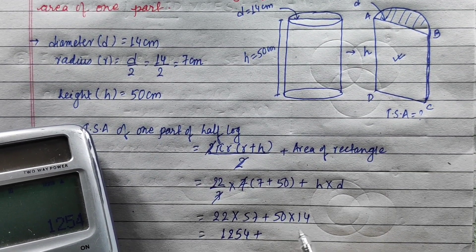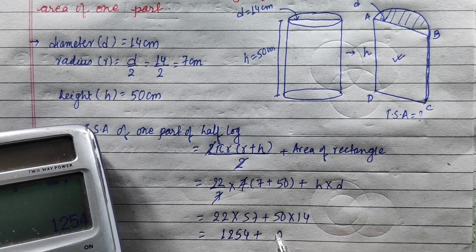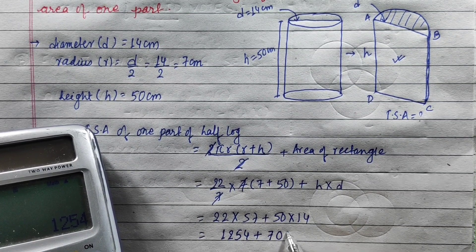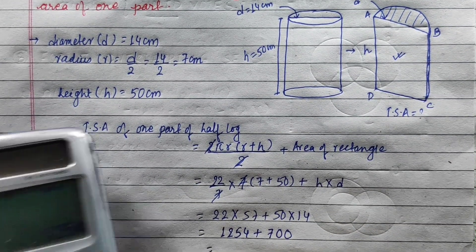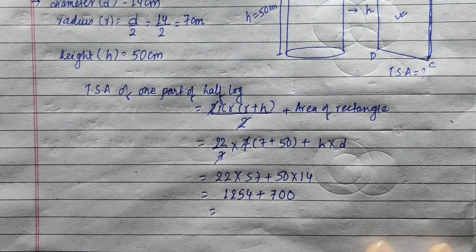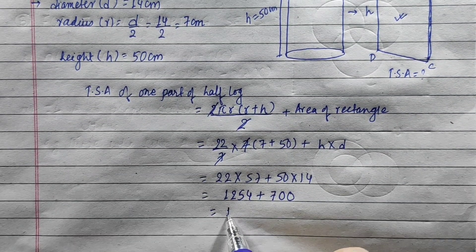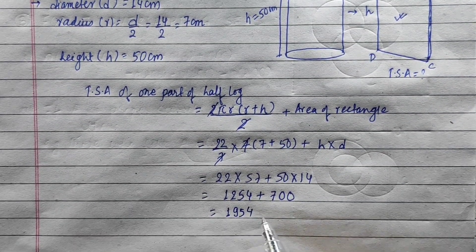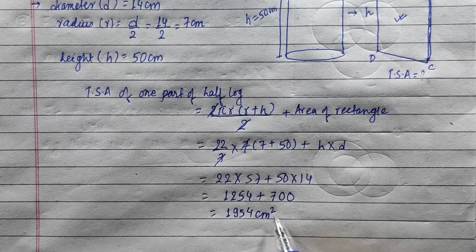50 × 14 = 700. Adding: 1254 + 700 = 1954 cm².